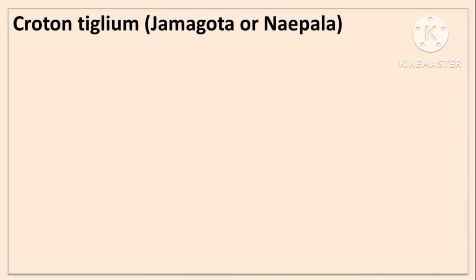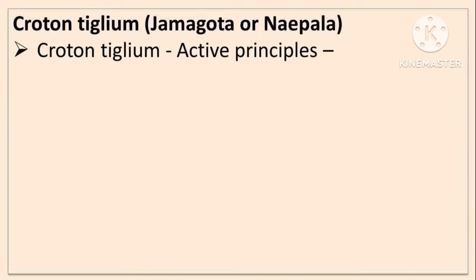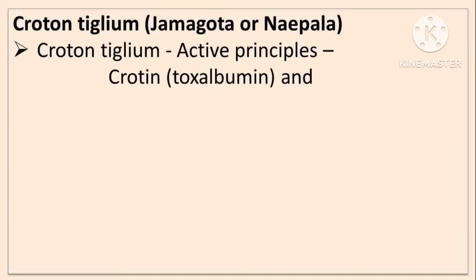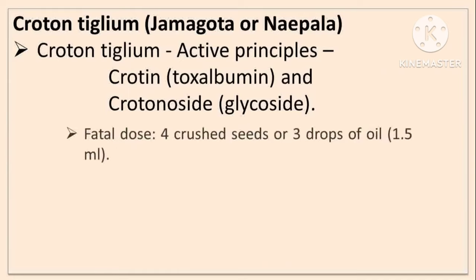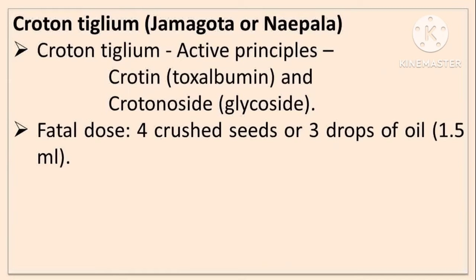Croton tiglium is also called as Jamal Gota or Nepala. The active principles are Crotein — it is a Toxalbumin — and Crotonoside, a glycoside. The fatal dose is 4 crushed seeds or 3 drops of oil, that is 1.5 ml.